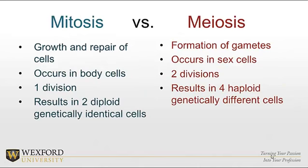Mitosis, first and foremost, is about growth and repair of cells. Meiosis, on the other hand, is about formation of gametes — the sex cells, so the sperm and the egg.